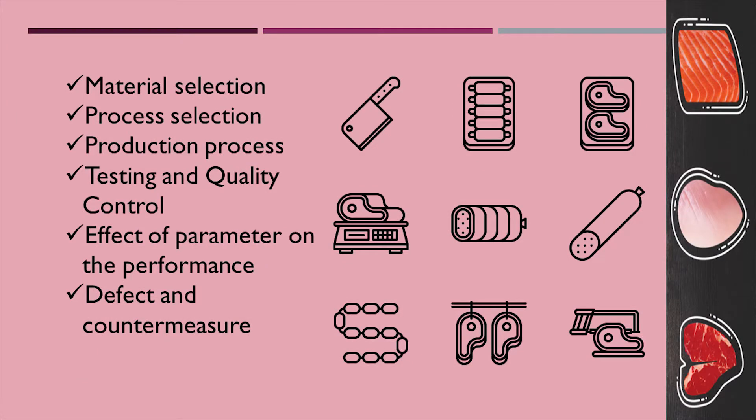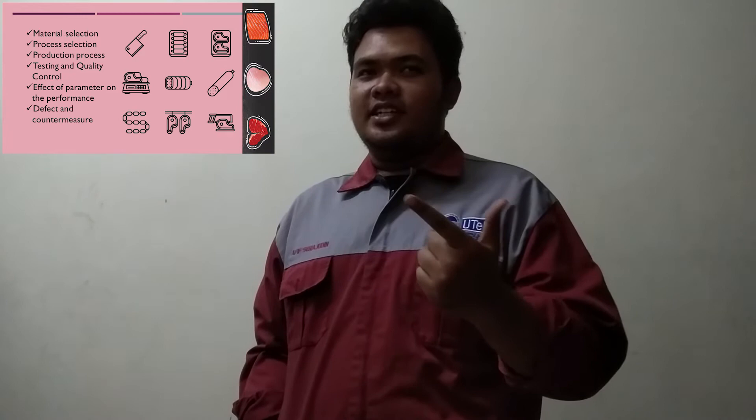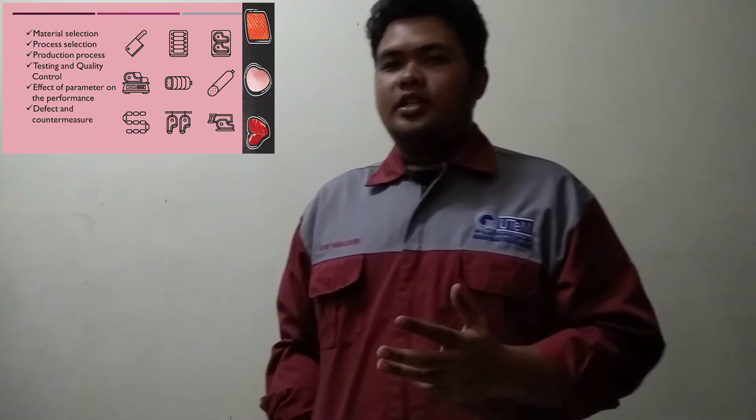From what I can see, I think I have the solution for you, which is I can suggest a meat packaging film. It will cover material selection, process selection, production process, testing and quality control, effect of the parameter on the performance, and lastly, defect and the countermeasure. I will explain to you about the meat packaging film. For meat packaging, there are several factors that relate to the total of meat packaging.